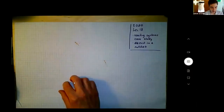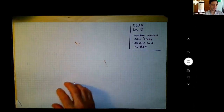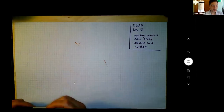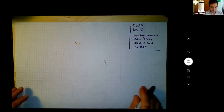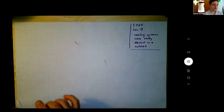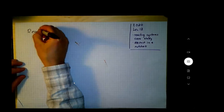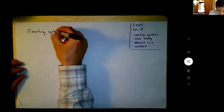This is the last lecture before an exam. What I'm going to do is walk through a case study. Let's look at reacting systems of ideal gases in a little more detail. And then if there's time remaining, I want to do Nernst in a nutshell, just for fun. So we're going to start with reacting systems of ideal gases.